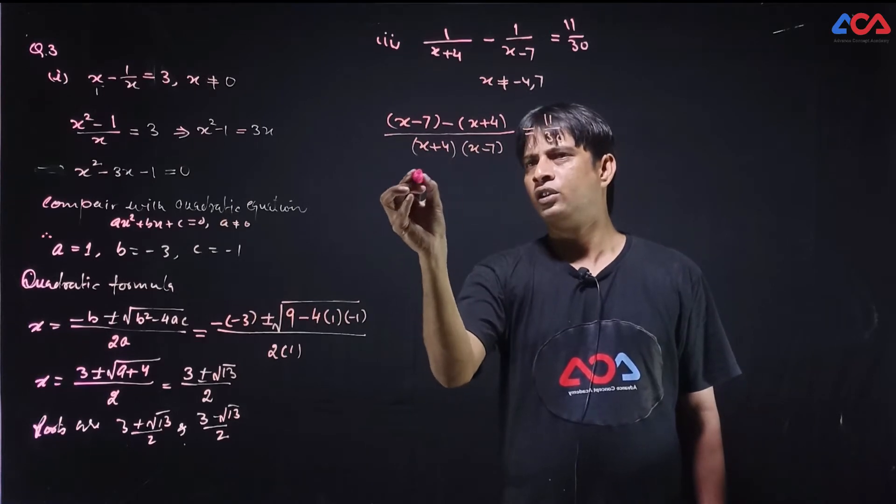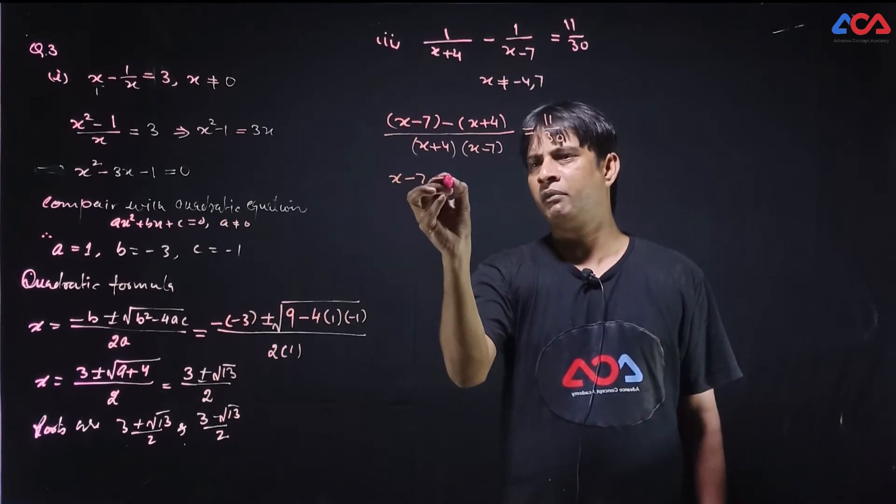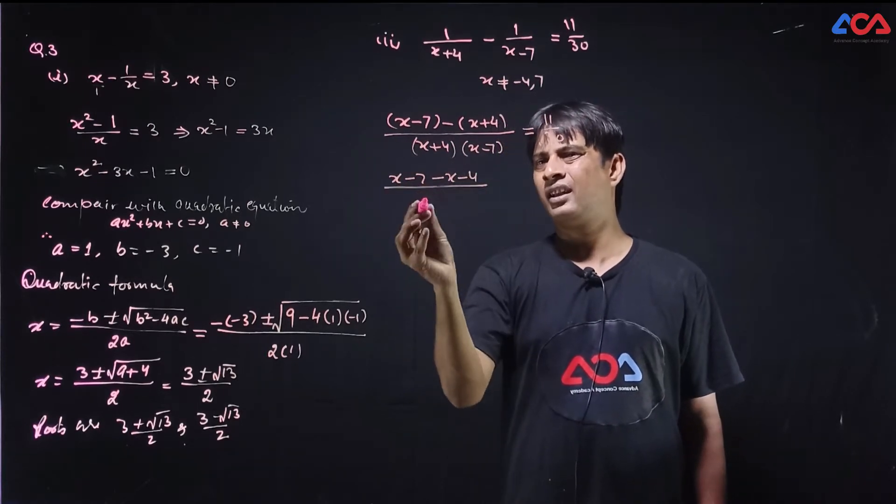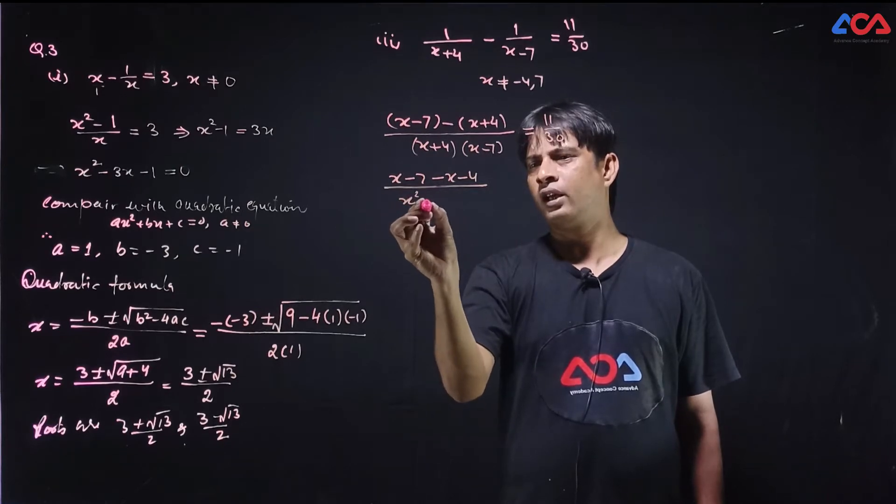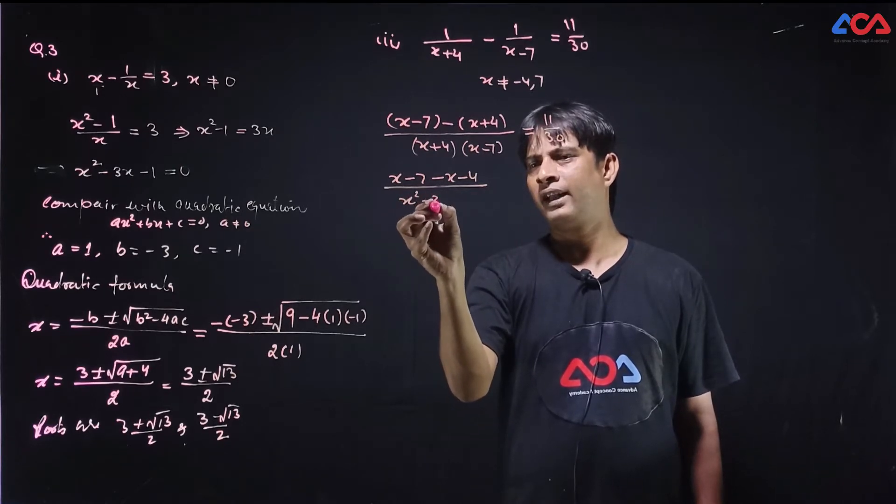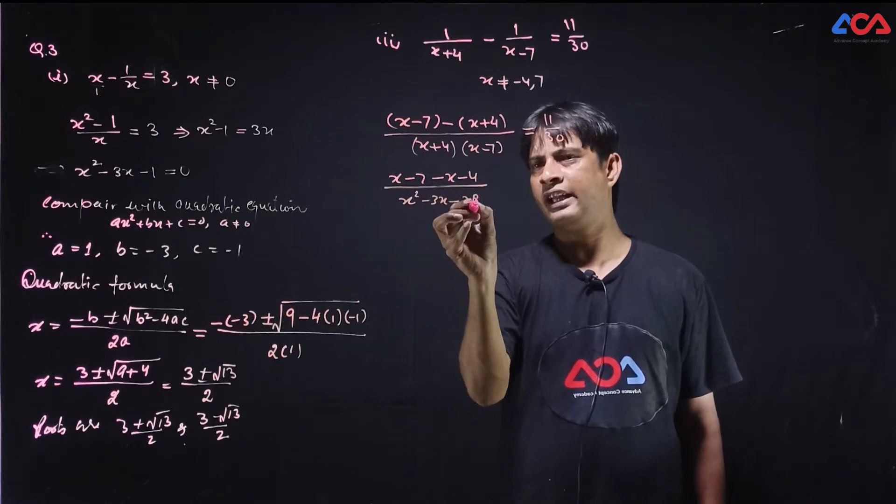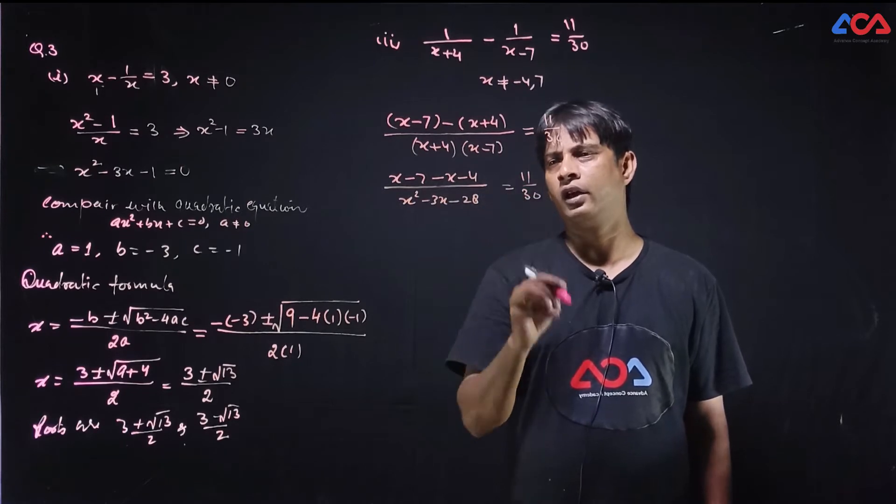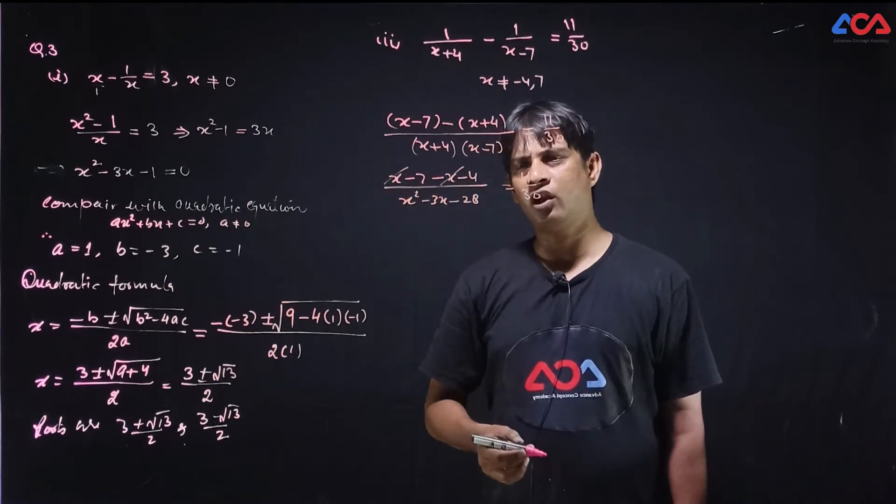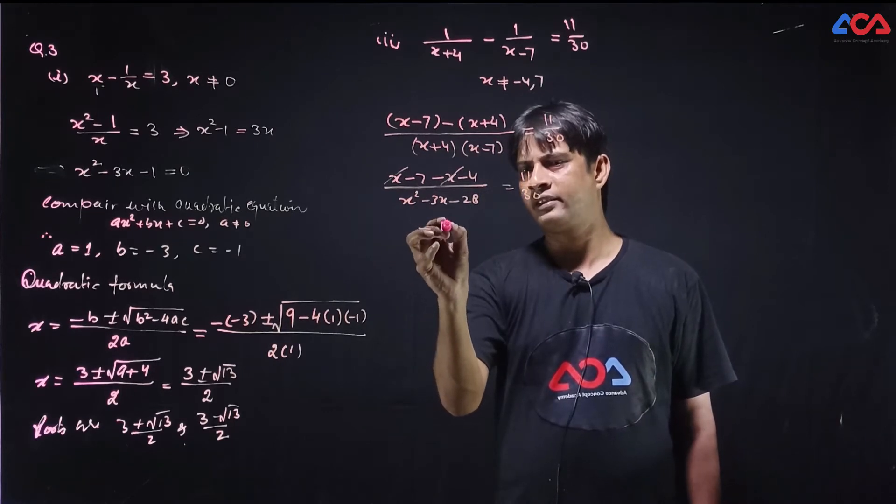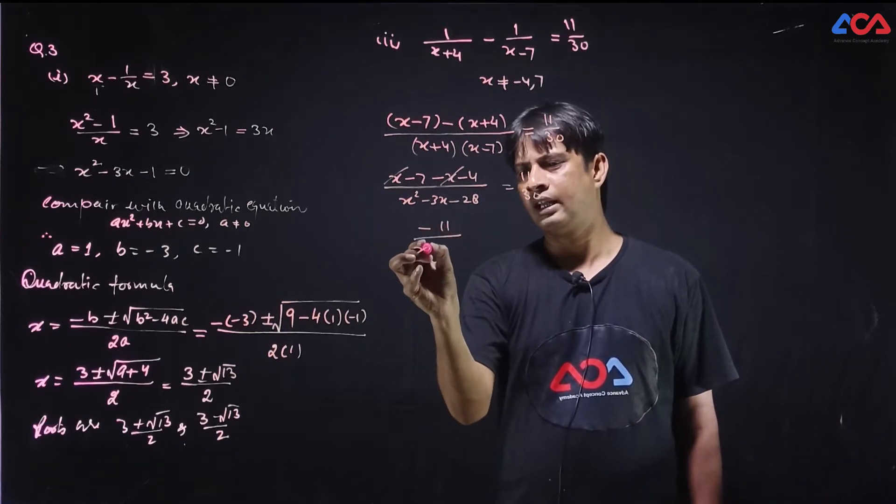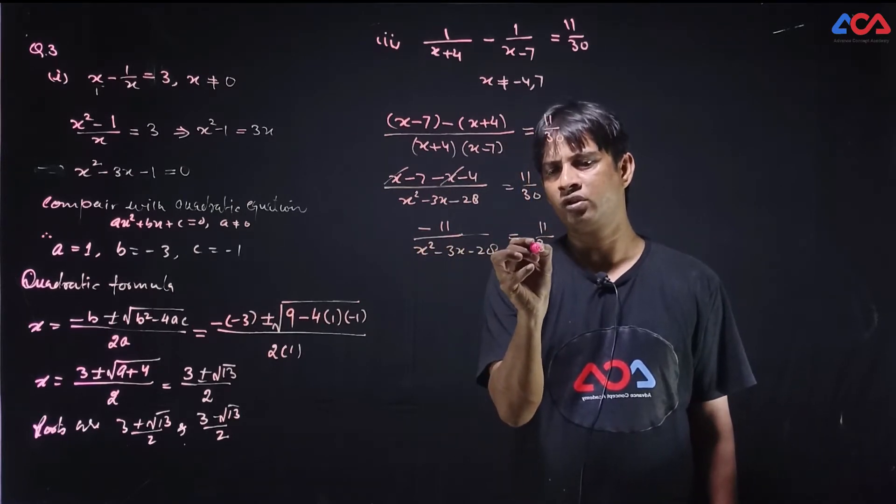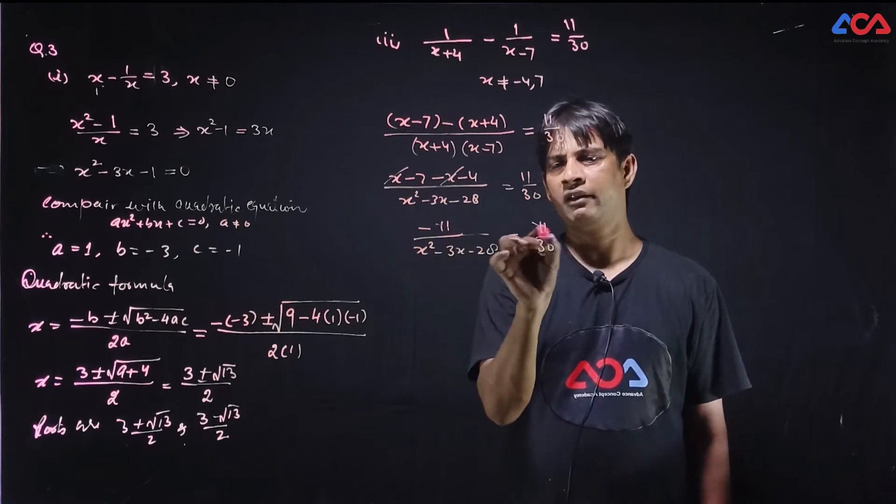So let's take this. x minus 7 minus x minus 4. We have to trace it. So x square minus 3x minus 28 which is equal to 11 upon 30. x cancel out. What is that? Minus 11 upon x square minus 3x minus 28 which is equal to 11 upon 30. 11 cancel out.